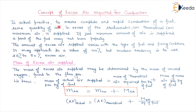In actual practice, to ensure complete and rapid combustion of a fuel, some quantity of air in excess of stoichiometric or theoretical or minimum air is supplied. Whatever minimum amount of air is required, we add some more air than the stoichiometric or theoretical air. That is called the excess air.